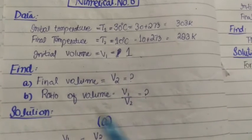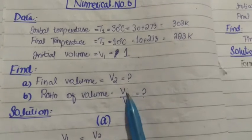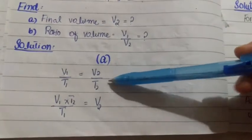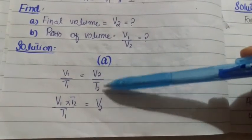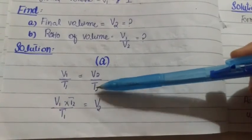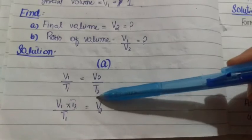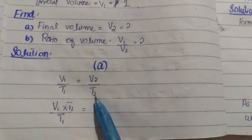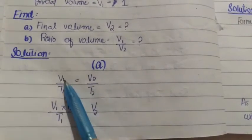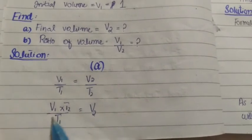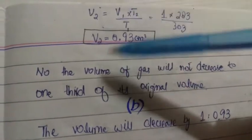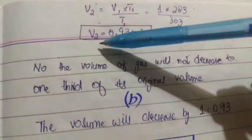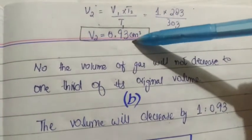So in part A we need to find v2. How to find it? Again use v1 over t1 equals v2 over t2. We need to find this value, so we put the unknown on one side and the known values on one side. To find v2, we divide both sides by t2, so v1 will be multiplied on this side. So the final expression here is v1 into t2 divided by t1. Now we will put values here. We put these values, so the v2 value is 0.93 cm³.